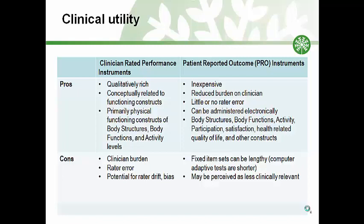Rehabilitation measures can be grouped into two general categories based on how they are administered. Clinician-rated performance instruments require a clinician to directly observe as the patient completes the required task or tasks. They include instruments like timed walk tests, where the clinician monitors the time taken to walk a fixed distance or measures the distance walked over a fixed time, and may observe the patient's quality of movement. The executive function performance test is another example, requiring the clinician to observe and rate the patient's performance of instrumental activities of daily living as an assessment of cognitive functioning.